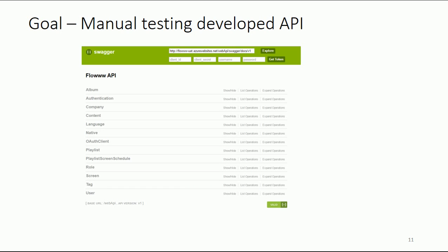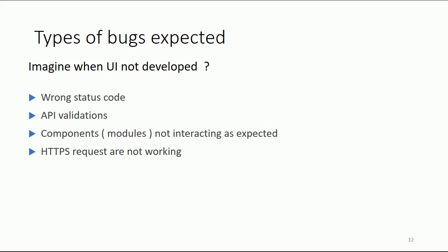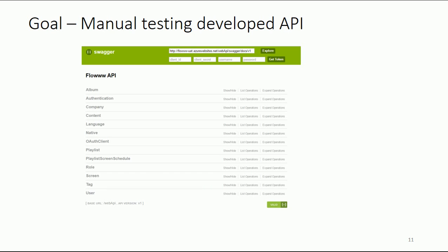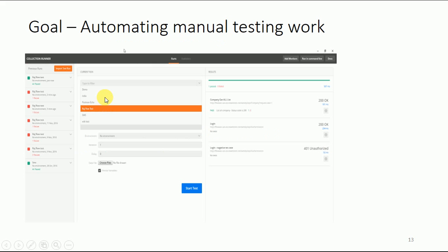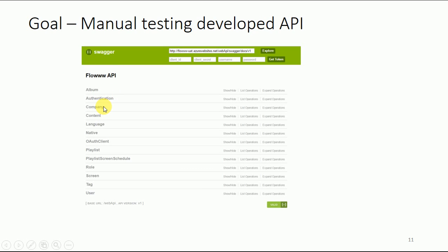If you look at how Swagger looks like — this is a screenshot I am briefly showing you on the screen. Once we put our request in the URL place, it fetches all the possible components and it shows what the application contains itself as a main component. When we start testing the API manually, the question is what kind of bugs we can get. Because if you look at this last slide, you see there are a number of components — like Album, Authentication, Content, Language, Native — but there is no GUI, no graphical user interface.